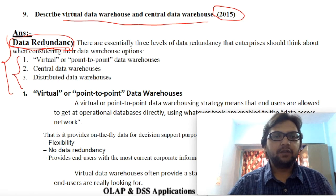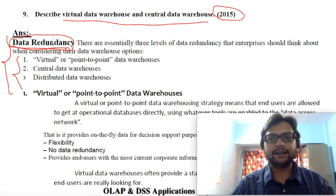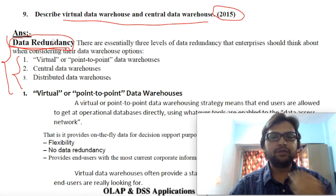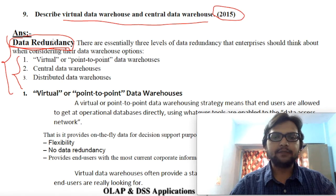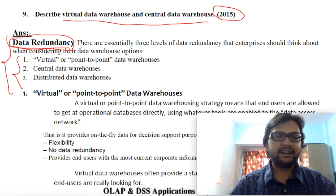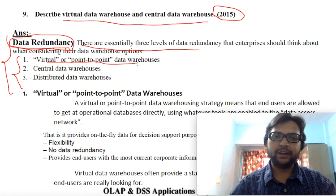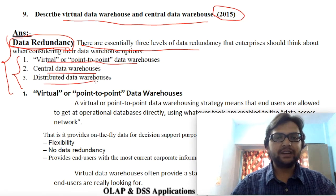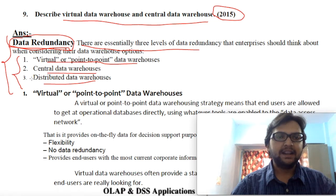Let's start discussing data redundancy. What do you mean by data redundancy? Redundancy means a duplication of data — we are going to create a copy of any particular data, tables, or anything required for our day-to-day operations. That is what we mean by data redundancy. There are essentially three levels of data redundancy: first is virtual or point-to-point data warehouse, second is central data warehouse, and third is distributed data warehouse.